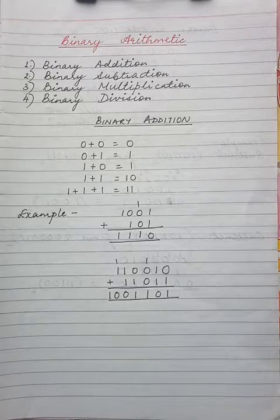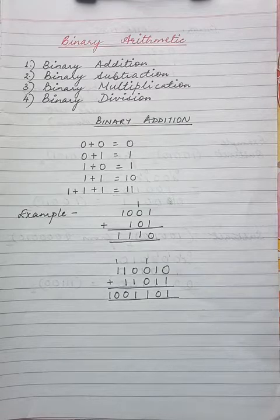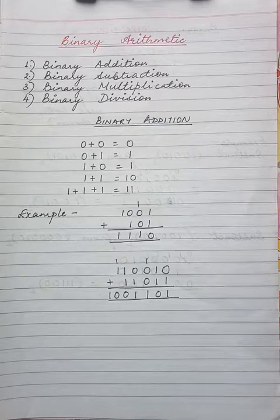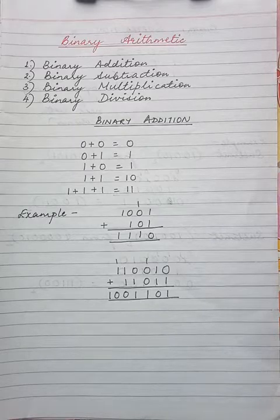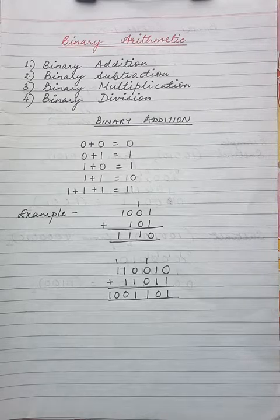Hello students. Now all of us know four basic types of arithmetic operations like addition, subtraction, multiplication, and division on two or more numbers. We can perform these basic operations with binary numbers as well. So today we will be learning about binary arithmetic — binary addition, binary subtraction, binary multiplication, and binary division.